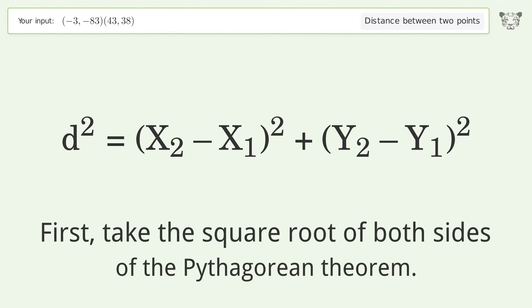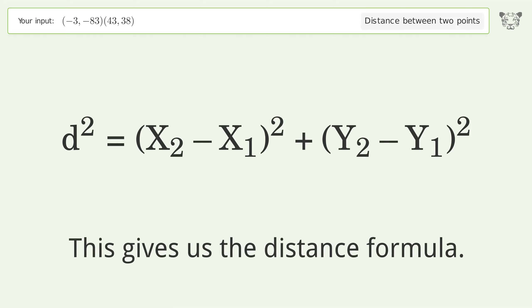First, take the square root of both sides of the Pythagorean theorem. This gives us the distance formula.